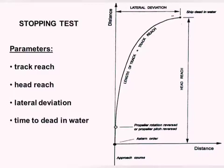The first measurement is the length of the track, which is your track reach. The second measurement is along the original course from the time a stern order was given until it was dead stop, and that is your head reach.